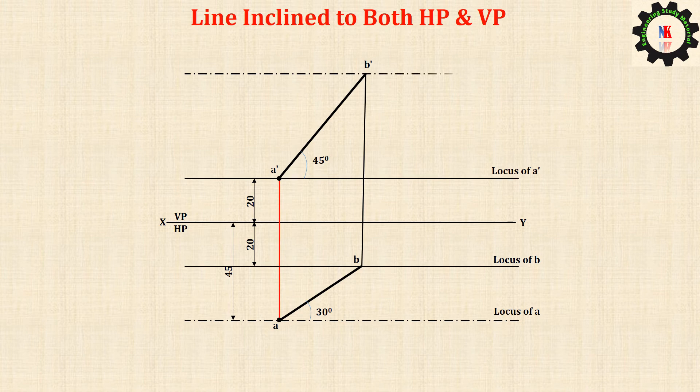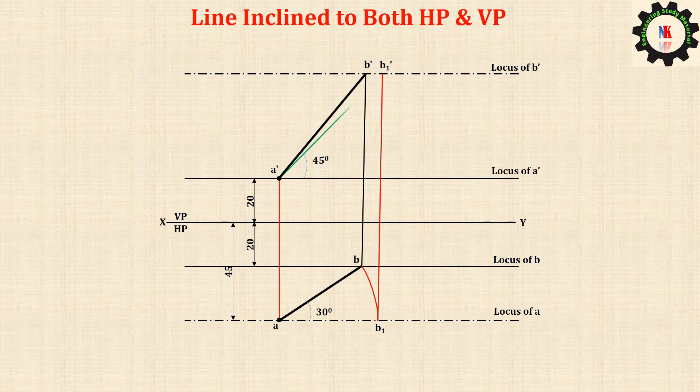Draw the locus line of B dash. With a as center and AB as radius, draw an arc to cut the locus line at B1. From B1 draw a vertical projector to meet locus of B dash at B1 dash. Join a dash and B1 dash.